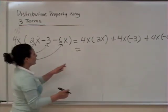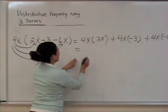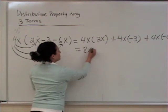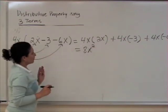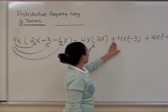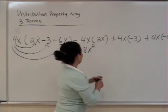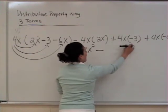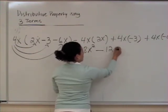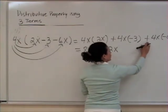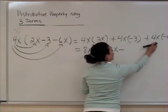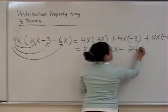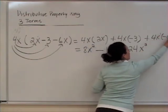Now we're going to simplify it. 4 times 2 is going to be 8, then we have x times x, which is x to the second power. Then we have positive 4x that multiplies negative 3 — positive and negative gives us negative — so 4x times 3x is going to be 12x. Then we have the same situation: positive times negative is going to be negative. 4x times 6x is going to be 24x to the second power, because they each have power 1 and power 1, and we add exponents.